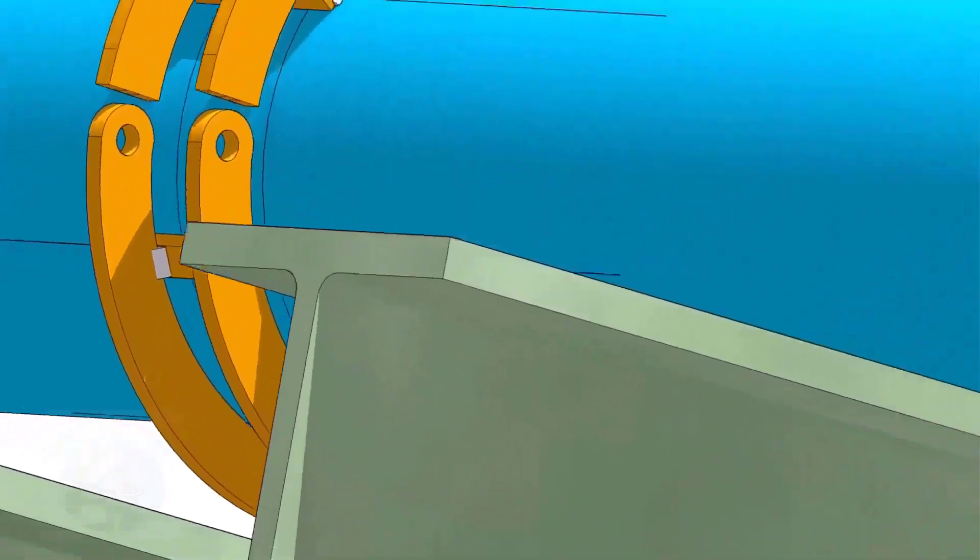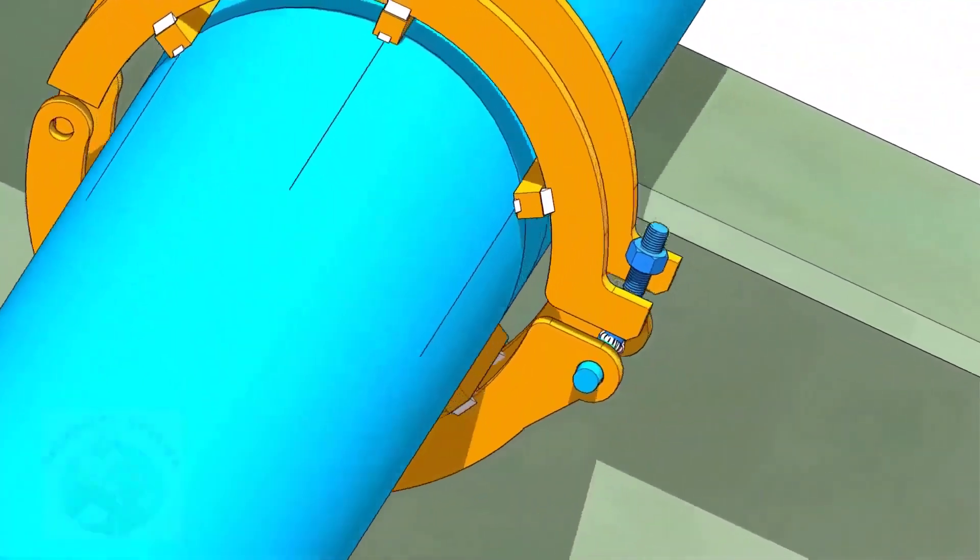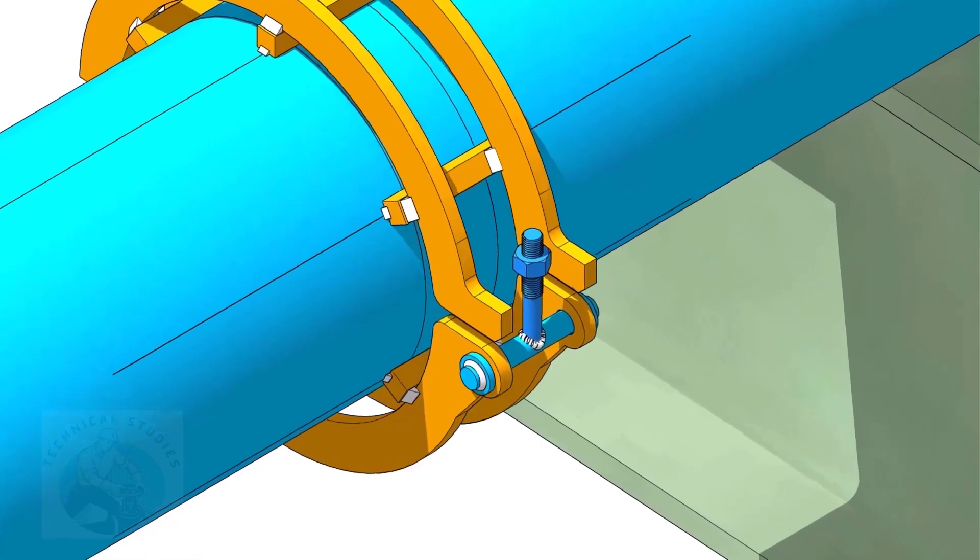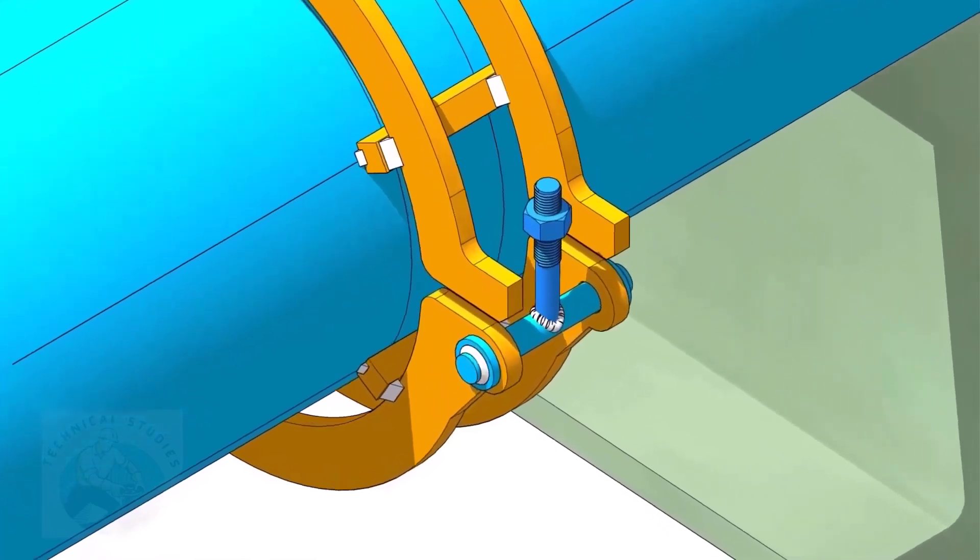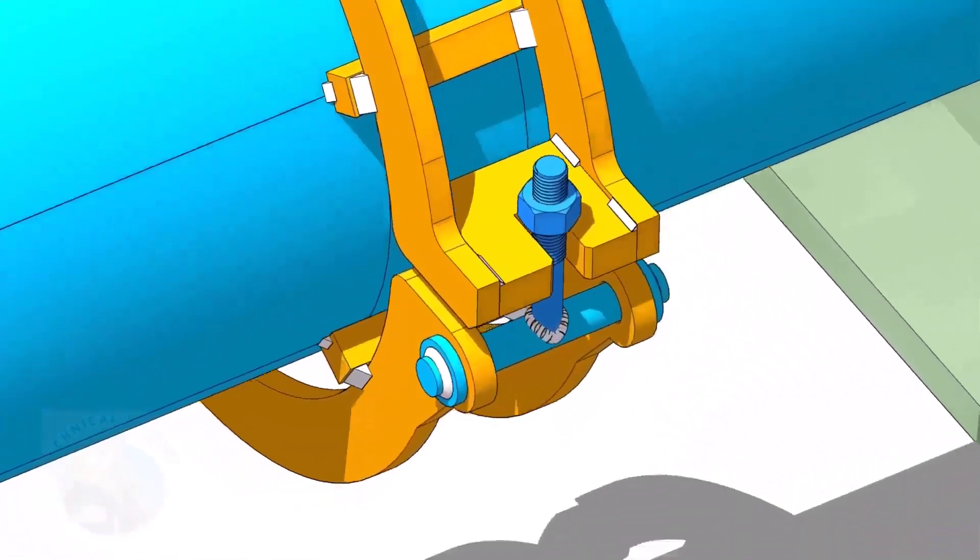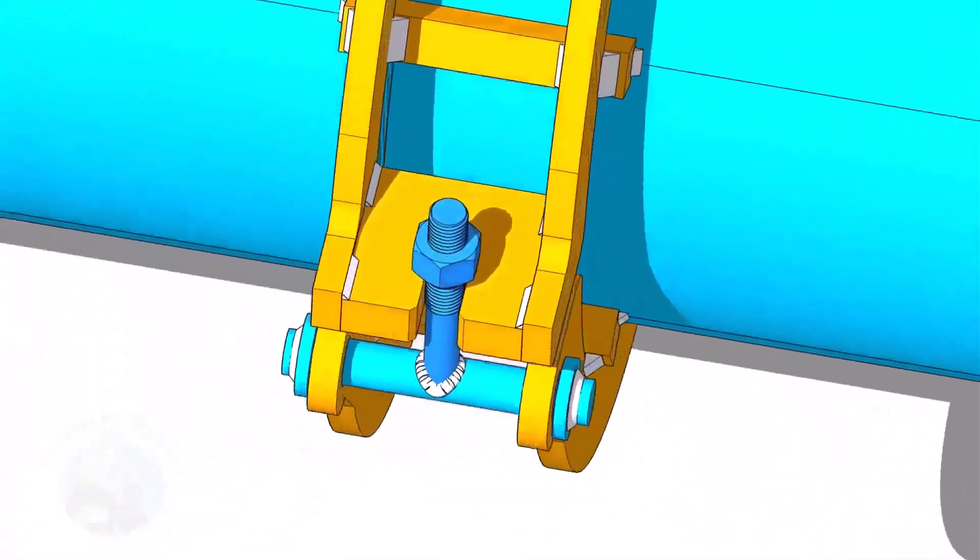First, put the bolt and the hinge plates, and tack weld the hinge plates with the top rings. Tack weld the slotted plate with the top rings as shown.